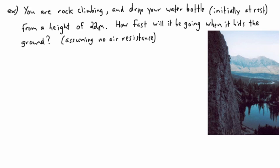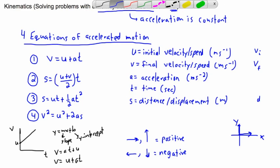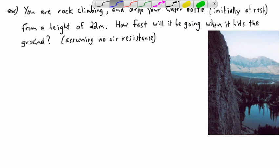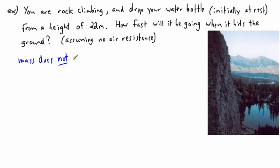So the question is: how fast will the water bottle be going when it hits the ground? You might think this is totally different from what we looked at before, but it's not. The mass doesn't matter. A lot of people think they need to know how massive the object is, but mass does not matter. It could have a mass of 5,000 kilograms or just a few grams — if there's no air resistance, the speed it hits the ground will be the same as a feather. Feathers behave differently because of air resistance.